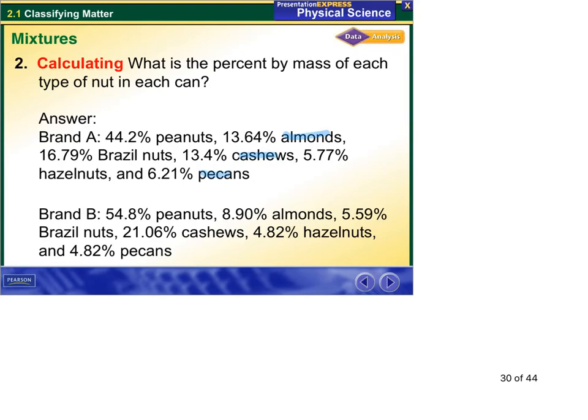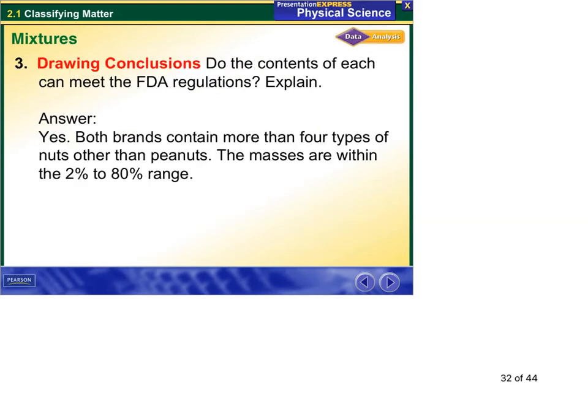And they're all within right ranges. So yes, they do. They contain more than four types of nuts other than peanuts, and the masses are within the 2 to 80% range.